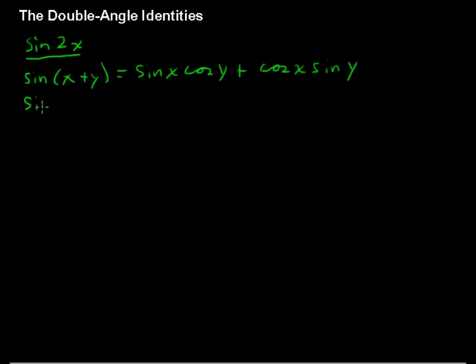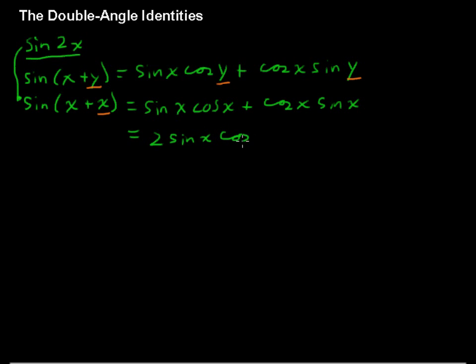If, however, I write sine of x plus x, which is the same as sine of 2x, well then, instead of y, I'm going to write x every place here. So now I could write this as sine of x, cosine of x plus cosine of x, sine of x.